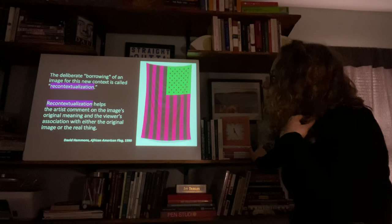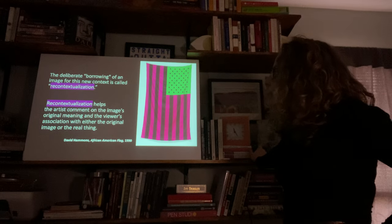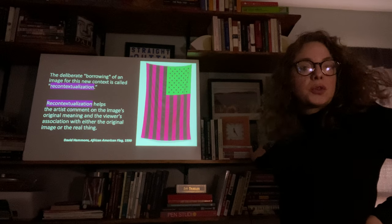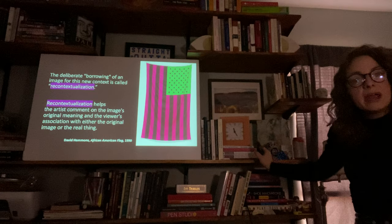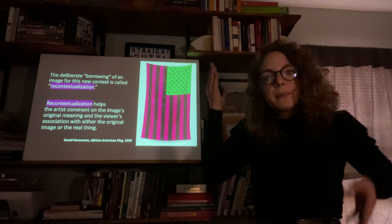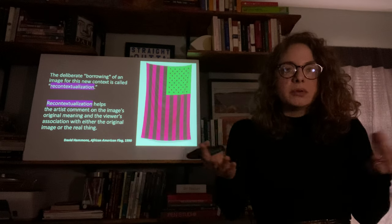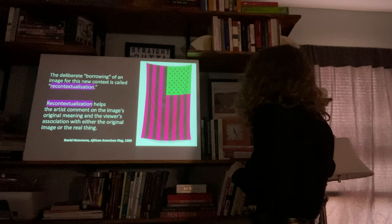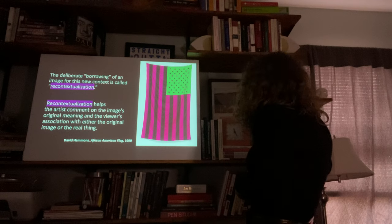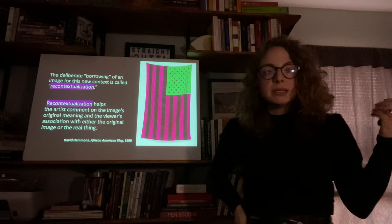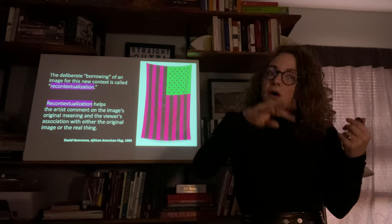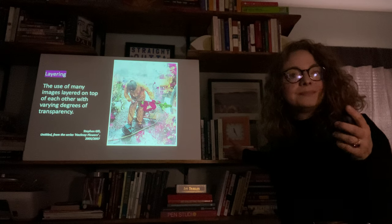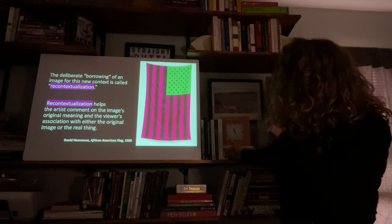The deliberate borrowing of an image for a new context is called recontextualization. Recontextualization helps the artist comment on the image's original meaning and the viewer's association with either the original image or the real thing. Here, this is by David Hammons, and this is the African-American Flag. It's very obvious where this original context came from — the American flag — but instead of red, white, and blue, it is green, black, and red: the colors of Africa. He was essentially recontextualizing the American flag for people who are African-American, because their culture was stolen from them.